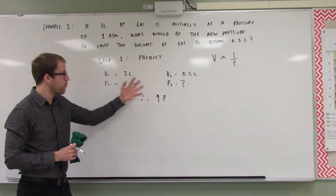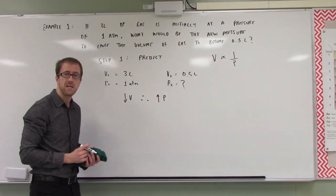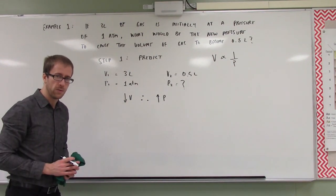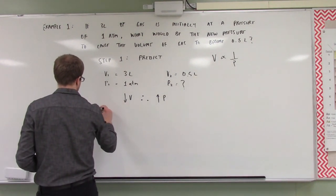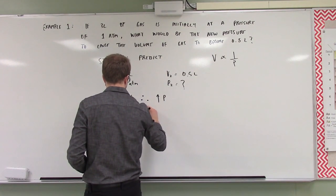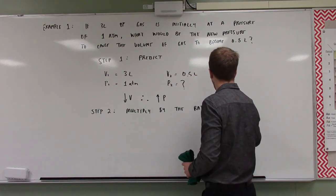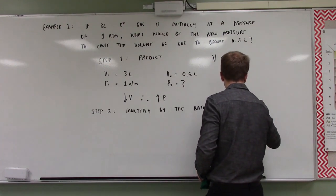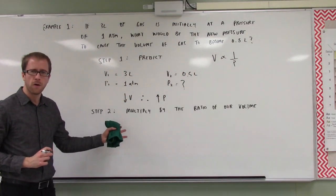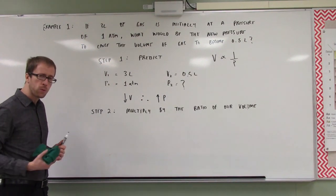You're not always going to get numbers that work out this intuitively, where you can just see that the volume decreased by six and the answer is six atmospheres. So step two: we are going to multiply by the ratio of our volume. The ratio of our volume represents how much it increased or decreased by.